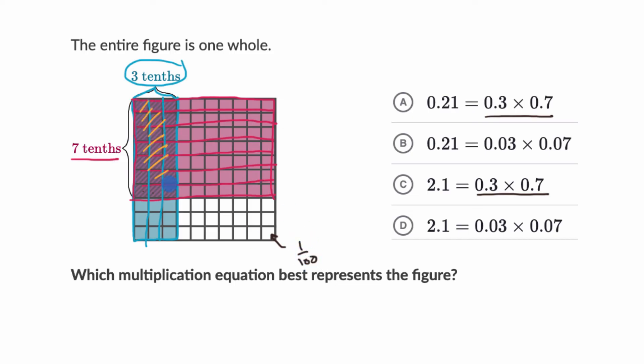So in the overlap, we have 21 of these squares. That's 21 hundredths. So 21 hundredths is 0.21. That's the same thing as 21 over 100, which is this choice right there. And we're done.